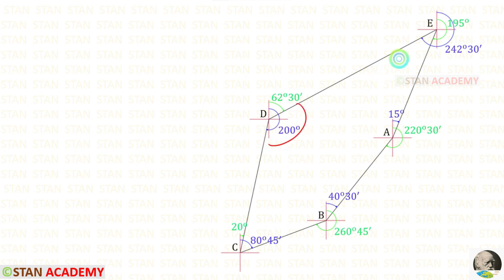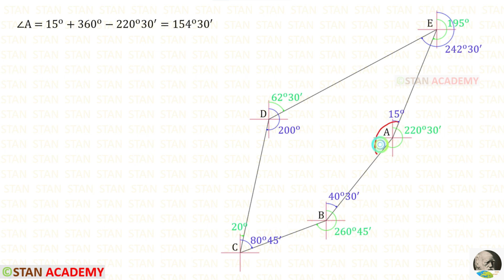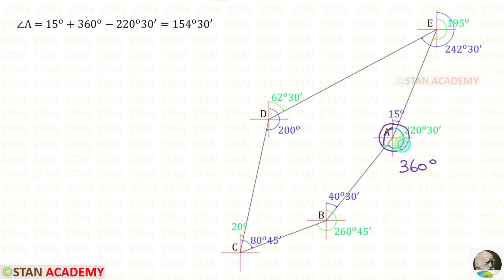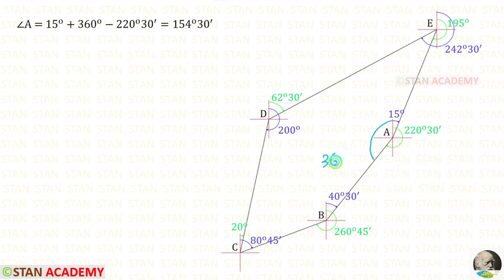Now we are going to find the interior angles. First, let us find the interior angle at station A. We know this angle is 15 degrees. Only we need to find this angle. We know that one circle is 360 degrees. To find this angle, we have to subtract 220 degrees 30 minutes from 360 degrees. So, this angle is 360 degrees minus 220 degrees 30 minutes. When we add this angle and this angle, we will get the interior angle at station A, which is 154 degrees 30 minutes.